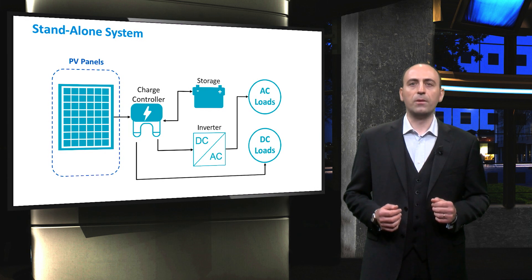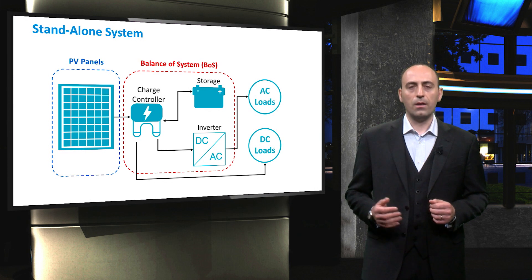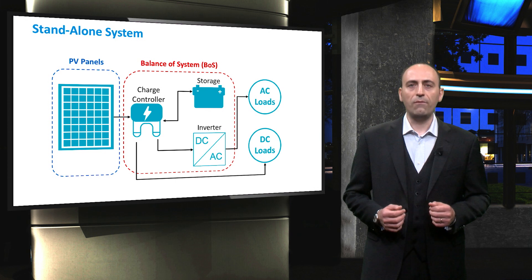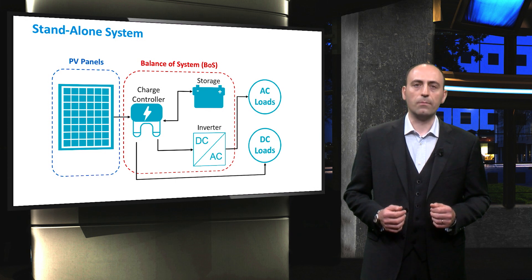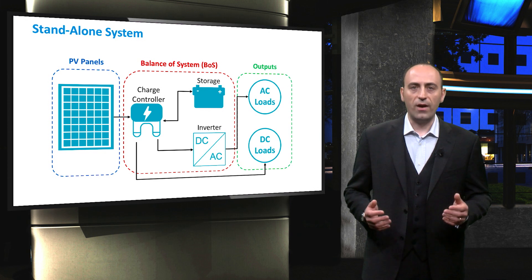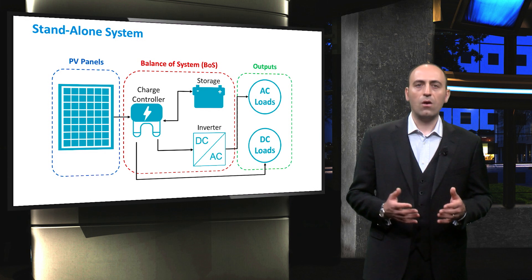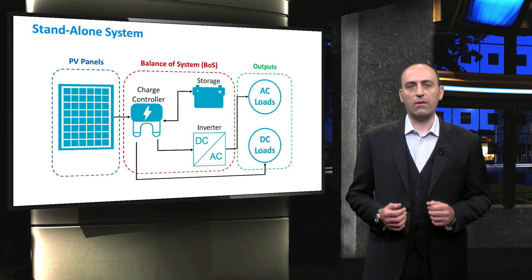In blue, we have the PV panels and in general all the components generating power. Then, in red, we have all the other devices required for a working system, which are called the balance of system or BOS. Finally, there are the loads, which can require direct or alternating current.